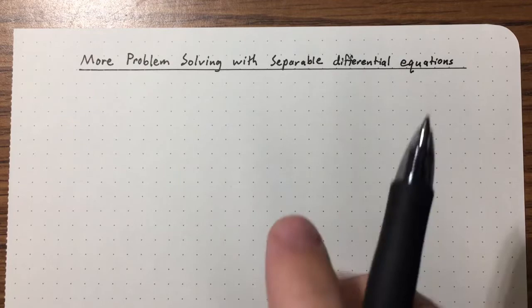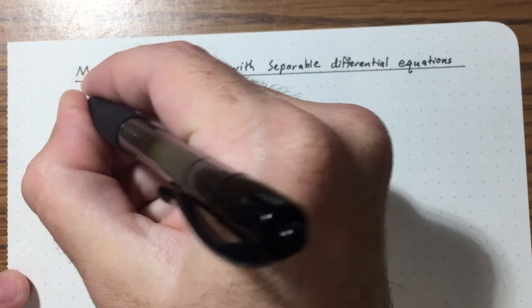In this lecture we're going to look at two slightly more complicated examples involving separable differential equations. The first one is Torricelli's law.